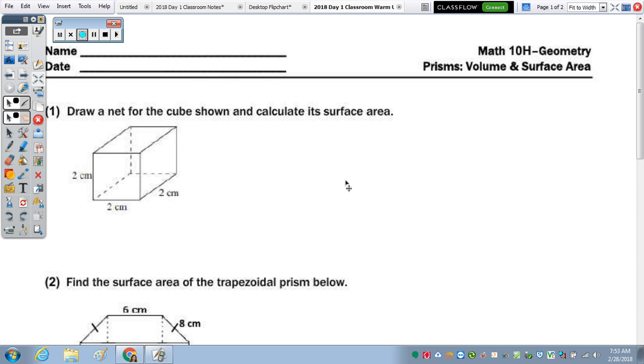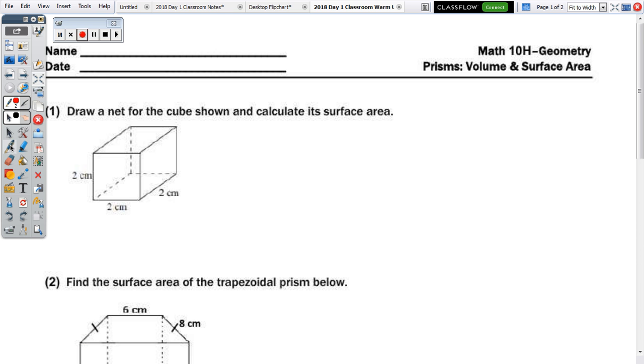Okay, number one says to draw a net for the cube shown and calculate its surface area. So think about, first of all, when you draw the net, how many surfaces does a cube have? Well, a cube has two bases and four faces, one face going around each edge of your base. So we have a square has four sides. There's going to be a rectangle off of each one of those four sides and then your two bases.